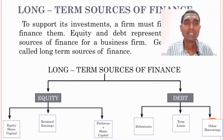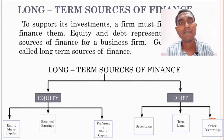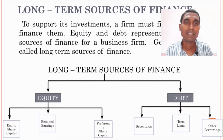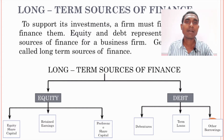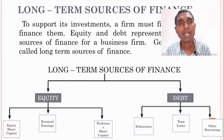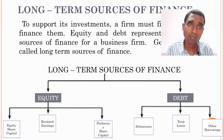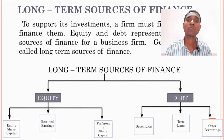Long-term sources of finance can be broadly classified into two types: equity and debt. Equity is further classified into equity share capital, retained earnings, and preference share capital — these three are combinedly called equity capital. Under debt, it can be further classified as debentures, term loans, and other borrowings — these are combinedly called debt. Both are important long-term sources of finance.